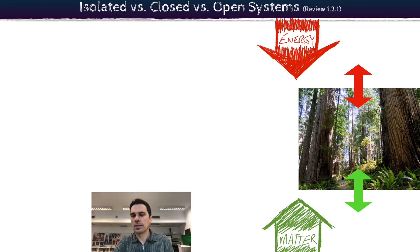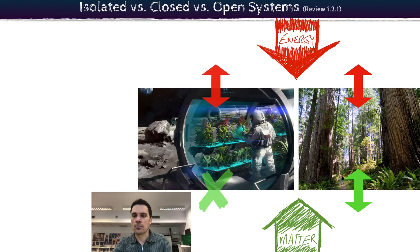Here's the Redwood Forest. You can imagine water coming in, flowing down the streams or being evaporated up into the sky. So water is moving in and out of the system as well and that's what that green arrow represents.